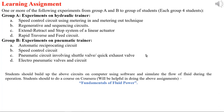Group B experiments are on pneumatic systems and include automatic reciprocating circuits, speed control circuits, pneumatic circuits involving shuttle valves and quick exhaust valves, and electro-pneumatic valves and circuits. To help complete these experiments using software, there is a course on Coursera on Fundamentals of Fluid Power. All students are required to register for this course, complete it, and provide the certificate.